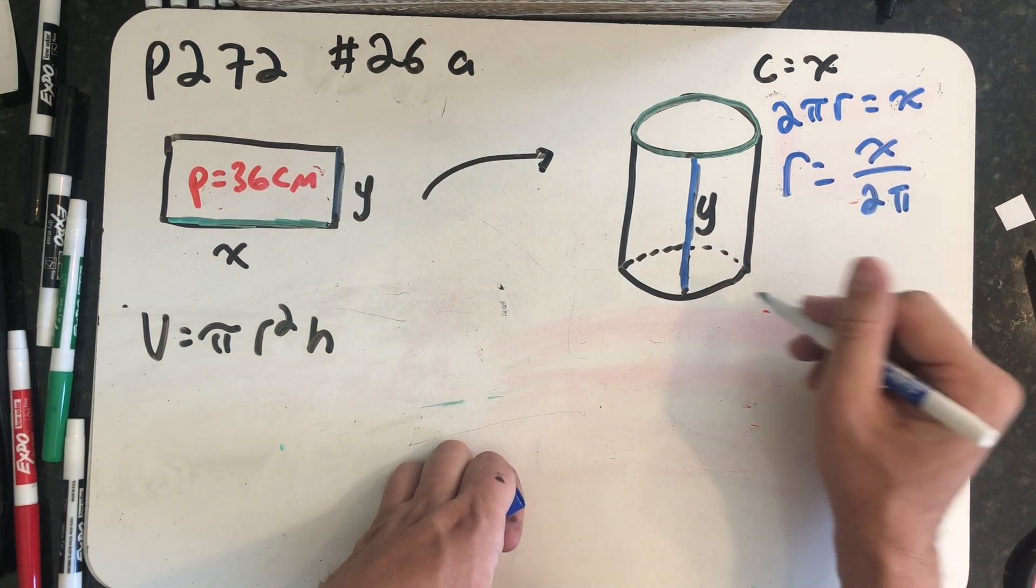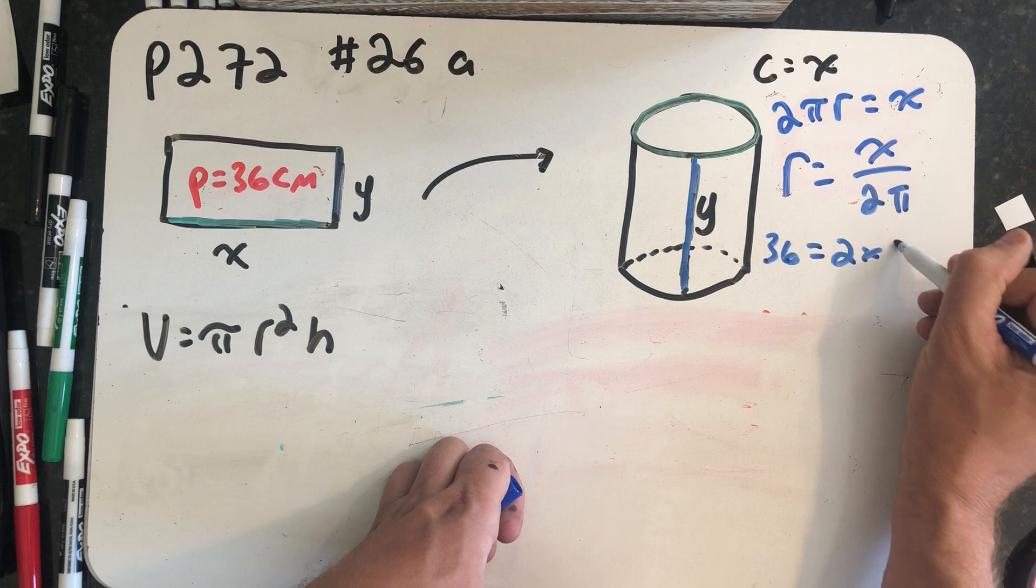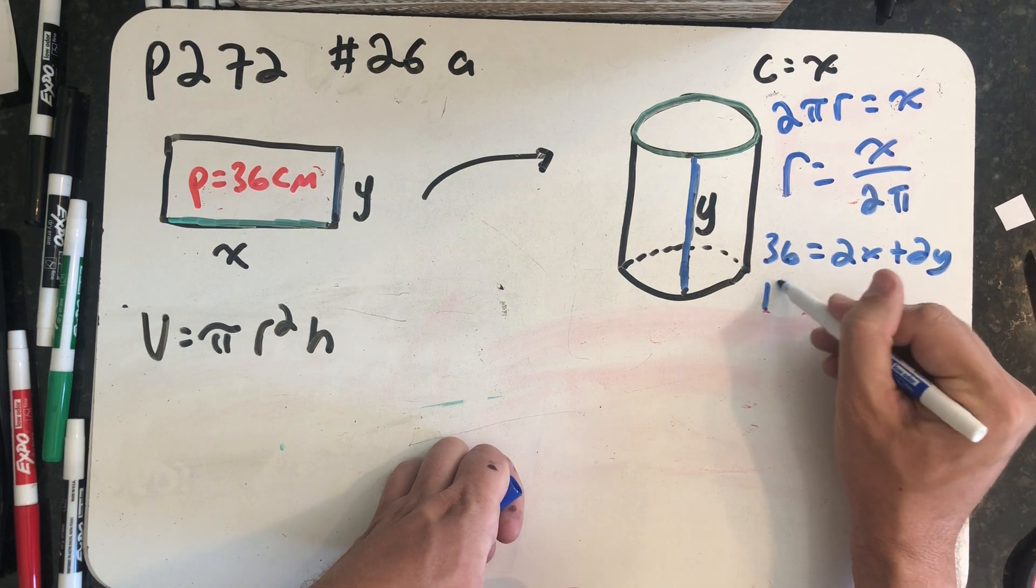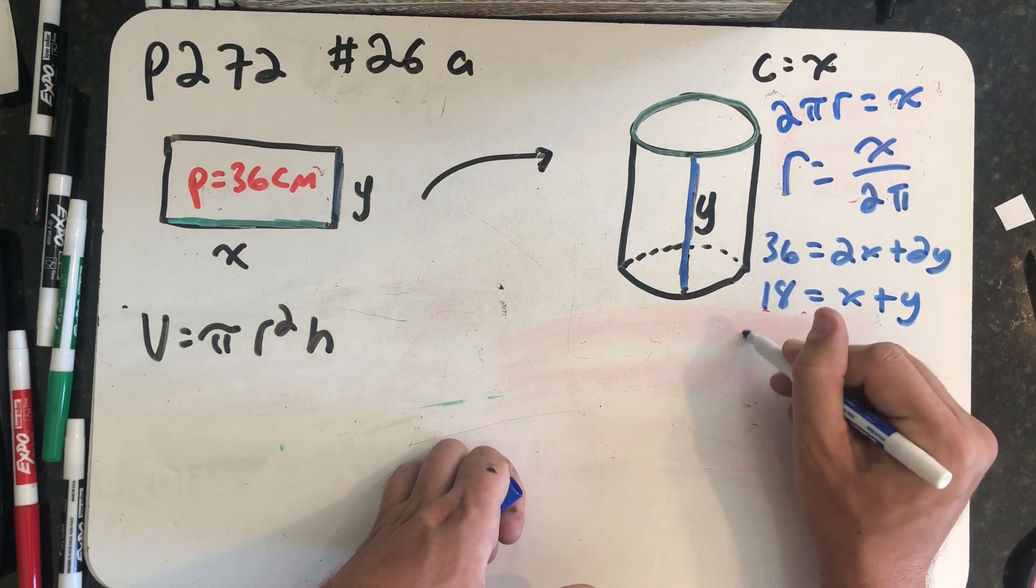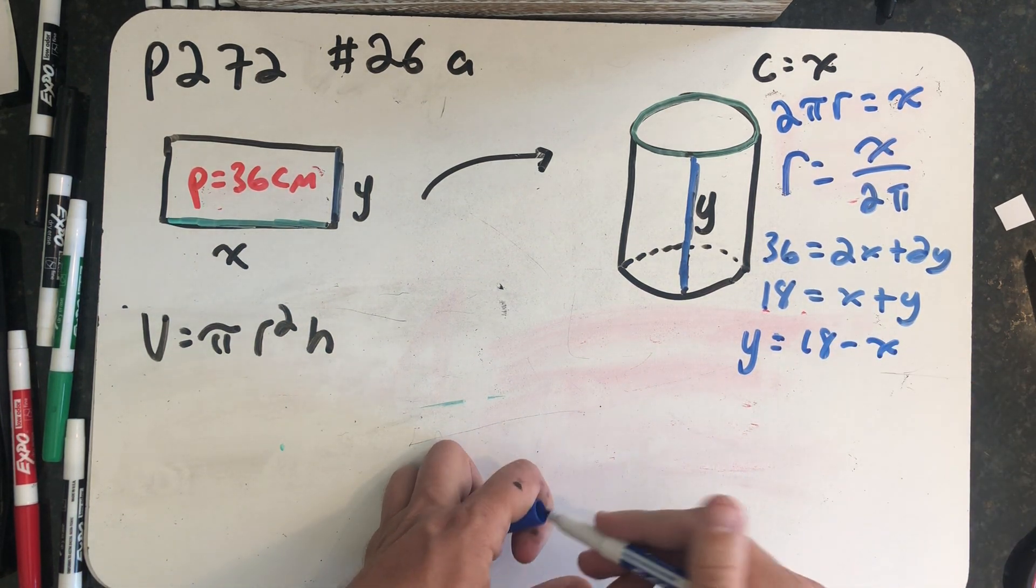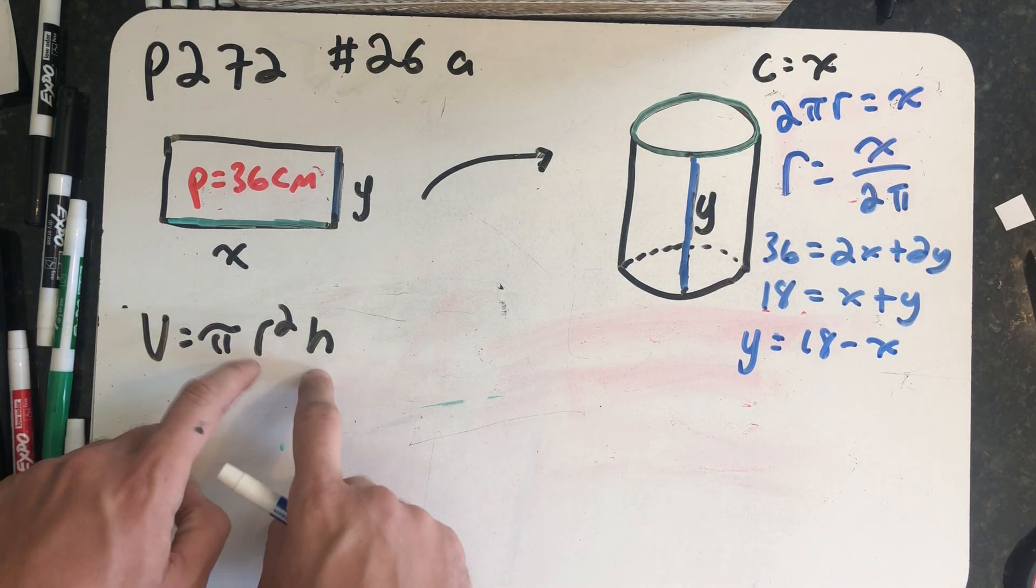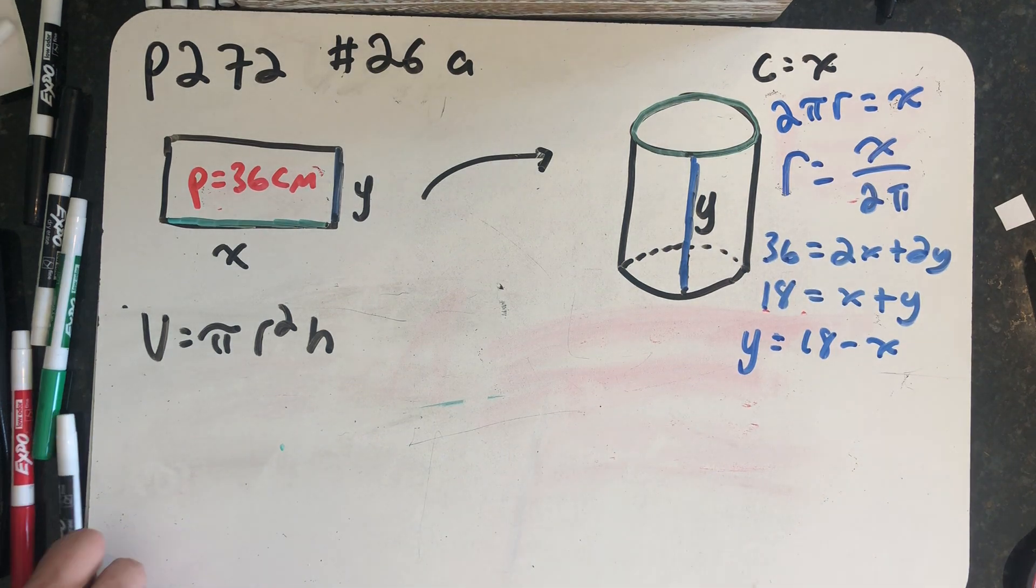I'm told the perimeter is 36 centimeters, so 36 is 2 times x plus 2 times y, telling me that x and y add together to be 18, and that the height is 18 minus x centimeters. This lets me substitute for r and h, and simply have an equation on the variable x.